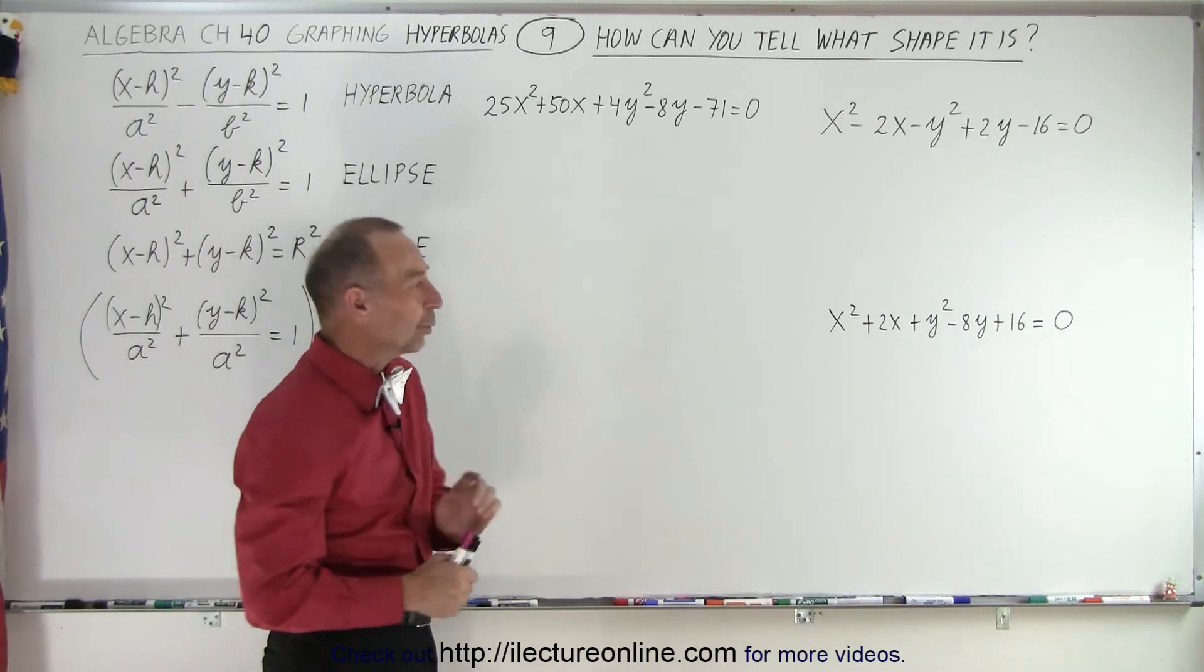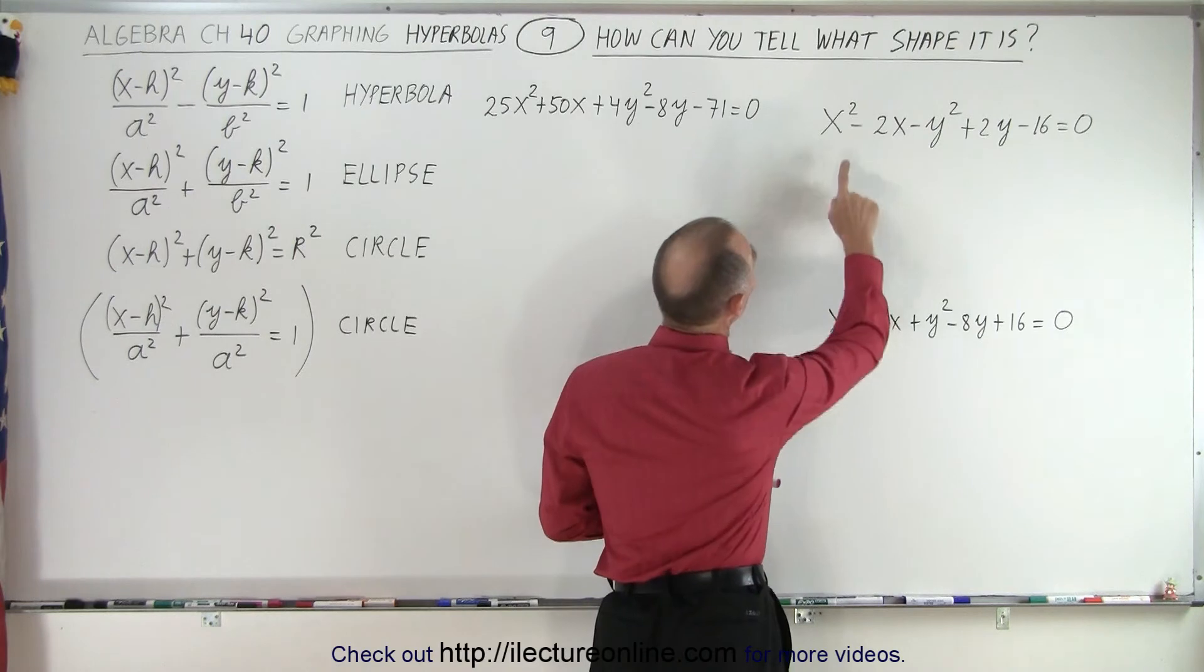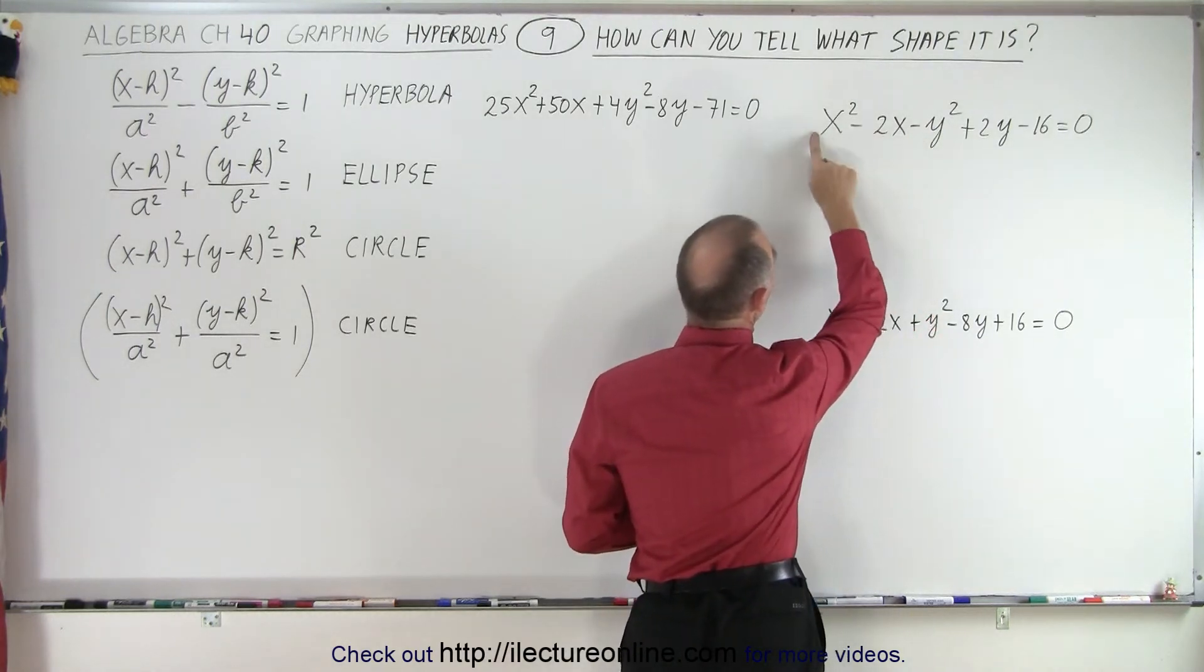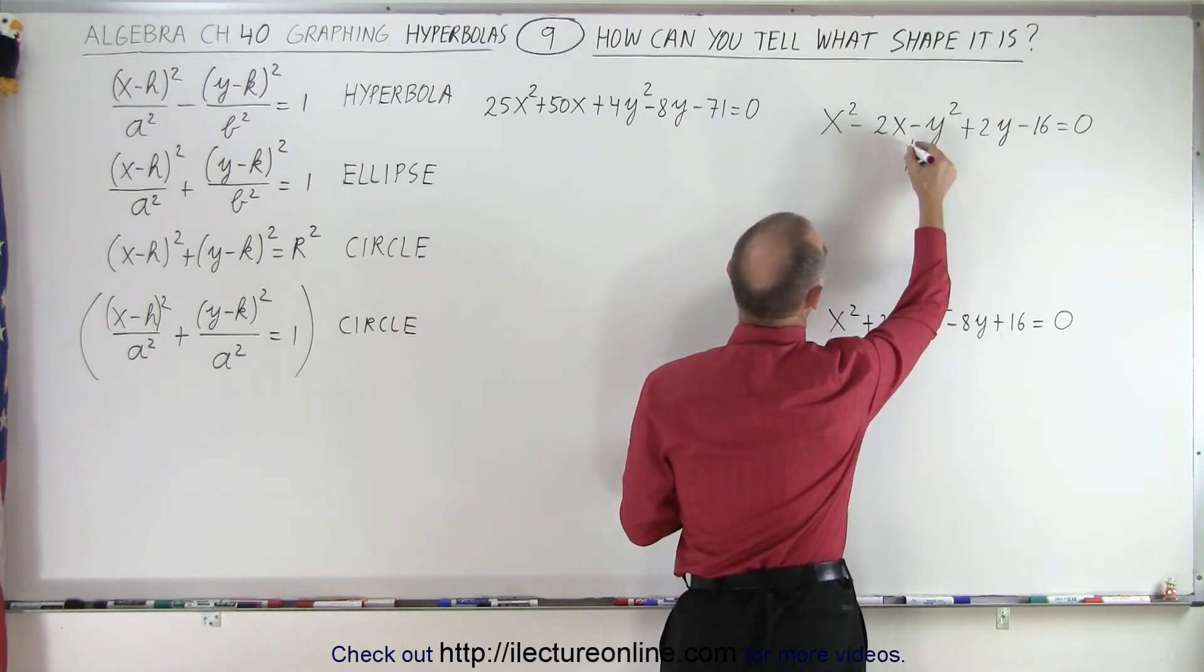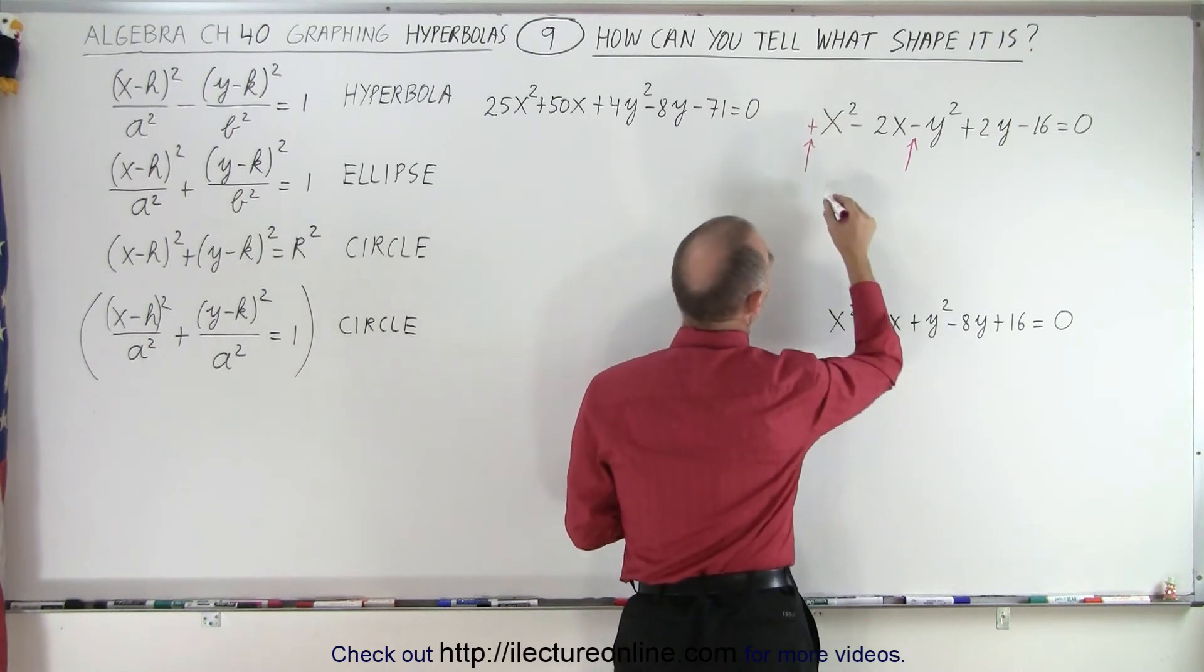How can you tell that you're dealing with a hyperbola? Well, the giveaway is when the x-square and the y-square terms do not have the same sign. This is positive and this is negative. So because of the negative sign and then here the positive sign, if you think of it as positive, this means you're dealing with a hyperbola.